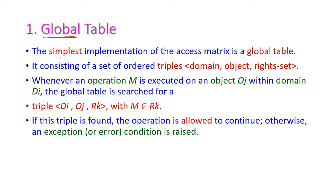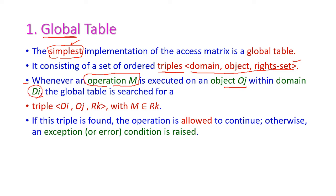The first implementation model is global table. This is the very simplest one and it consists of ordered triples which contain domain, object, and a right set — that is access right set. Whenever an operation is executed on a particular object within a domain, the global table is searched for this triple. The operation should belong to this access right for that particular object. If the triple is found, the operation is allowed to continue.